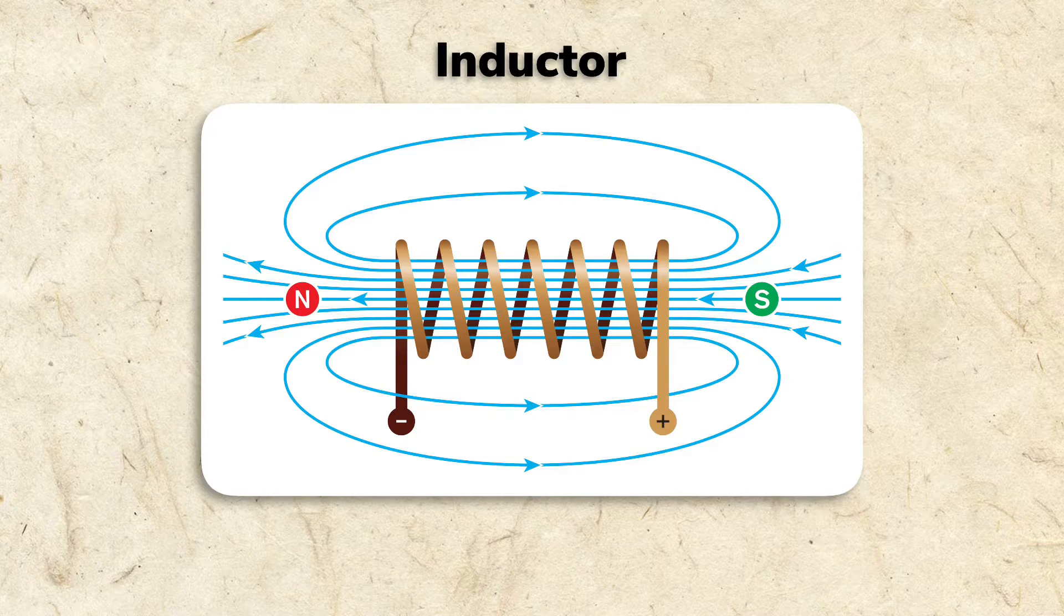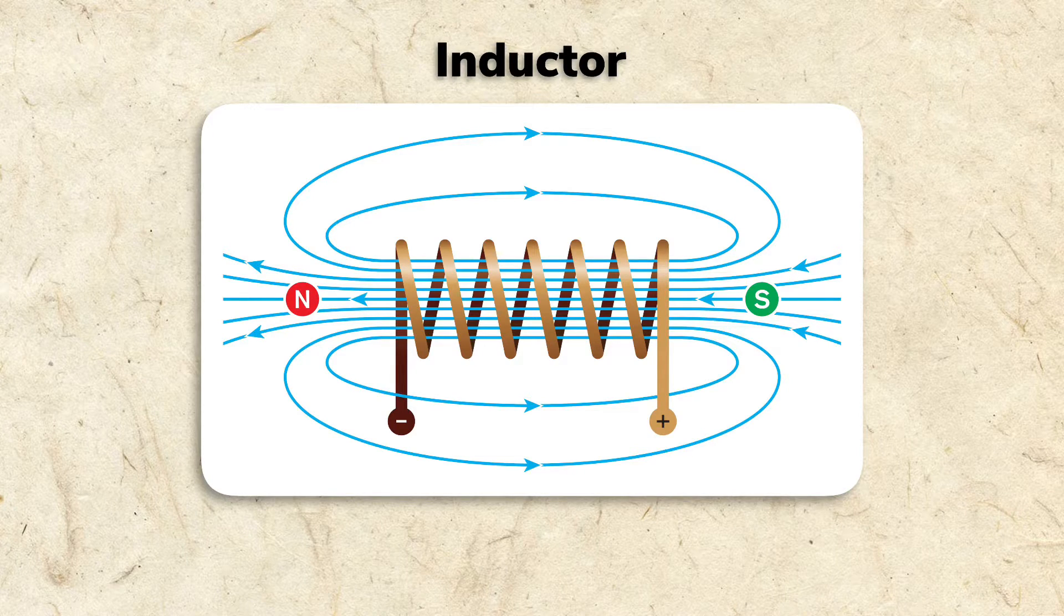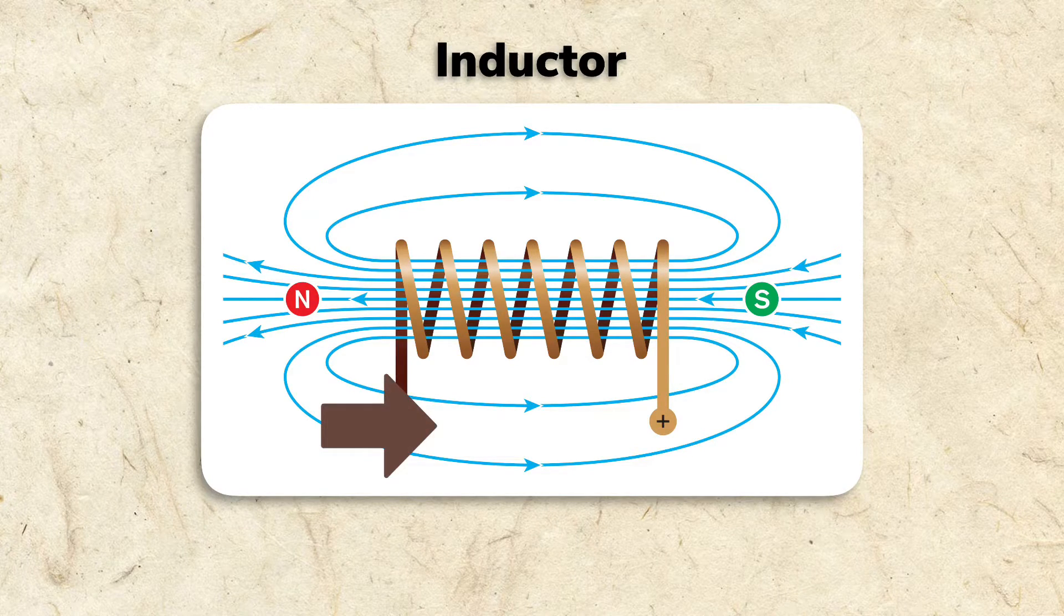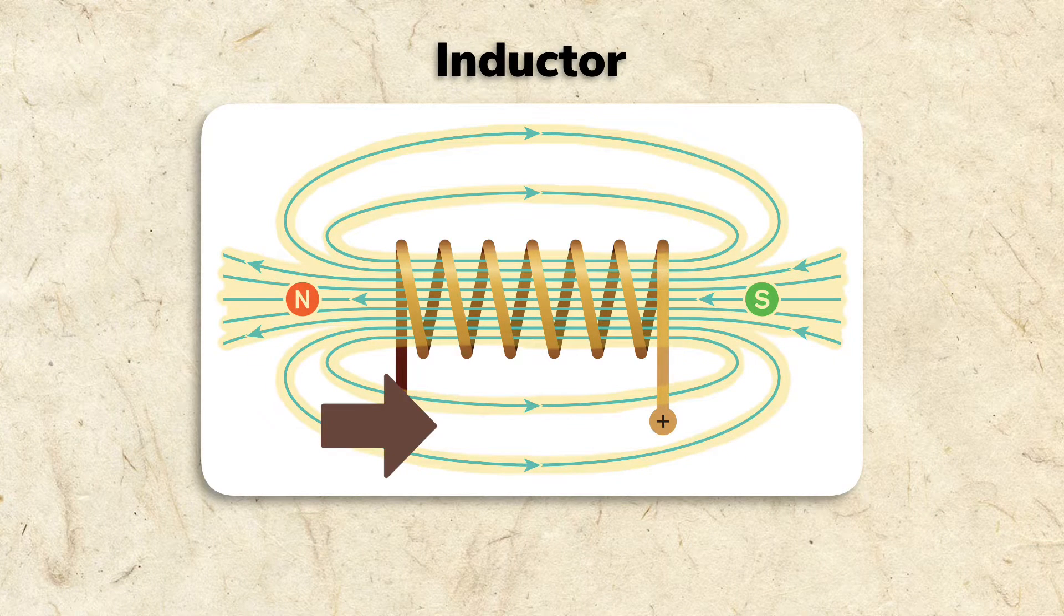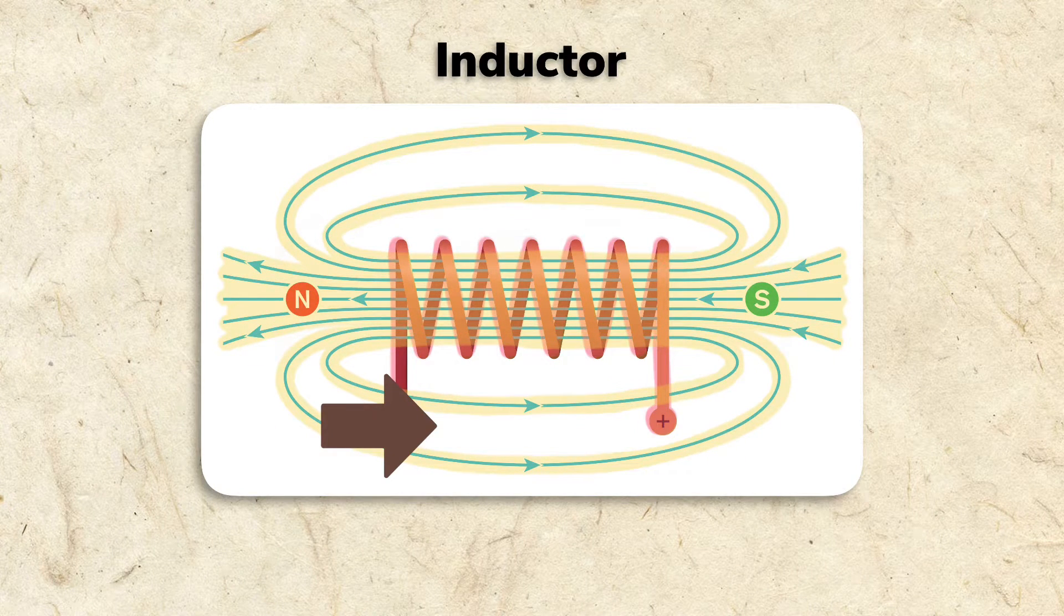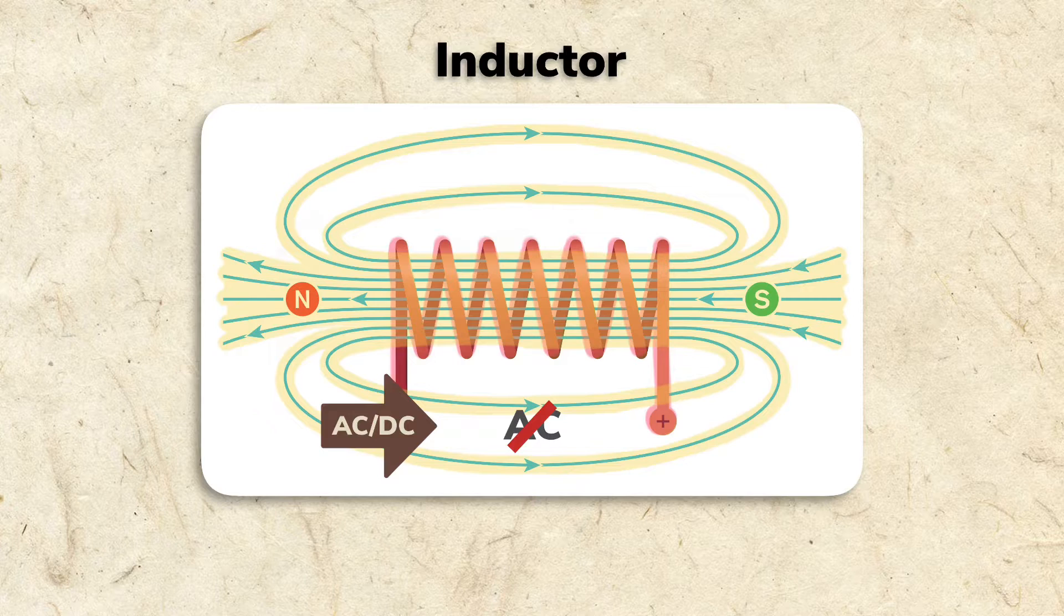Inductors have the opposite property of capacitors. As current flows through the coil, the magnetic field that's created reacts with the current and blocks AC while passing DC.